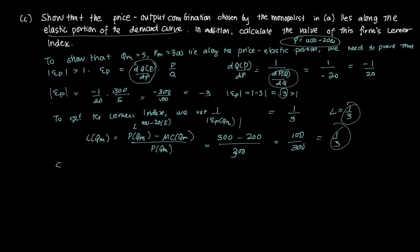So how do we interpret that? Since L equals 1 over 3, which is greater than 0, then the firm enjoys some form of monopoly power.